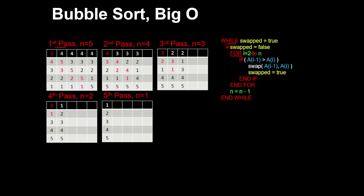In the first iteration, i equals 2. The number at index 2 in the array is compared to the previous number in the array, and because 5 is greater than 4, these numbers get swapped, and the swapped flag is set to true.